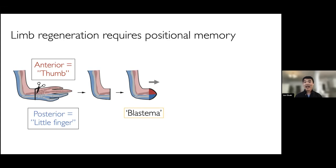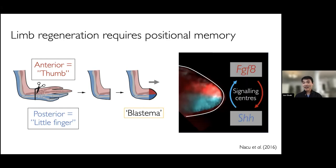In axolotls, a limb amputation will trigger anterior red cells to migrate to the amputation plane, as well as posterior blue cells. There they will meet and form a structure called the blastema, which is a proliferative structure containing all of the spatial information necessary to restore the missing part of the tissue. Eli Tanaka's group and others have shown that this requires signaling molecules including FGF8, expressed by anterior red blastema cells, and sonic hedgehog, expressed by posterior blue blastema cells. These evolutionarily conserved ligands interact in an interdependent positive feedback loop to maintain tissue outgrowth and enable re-patterning to restore the missing part of the limb.